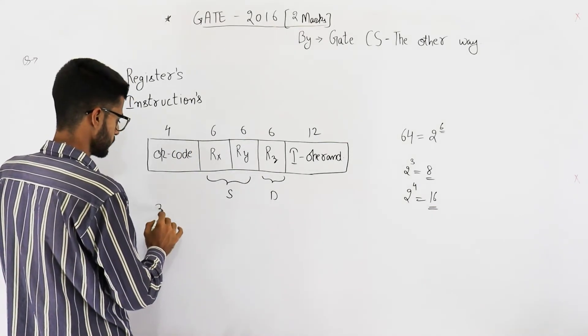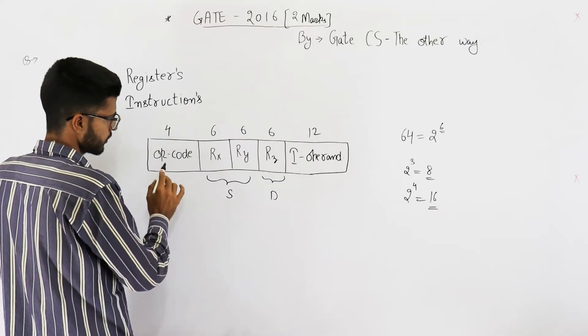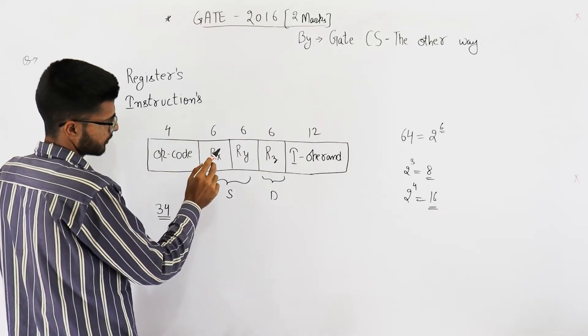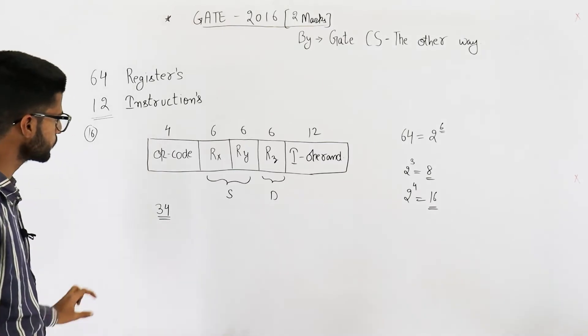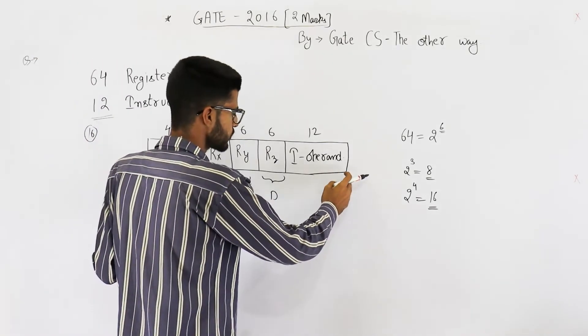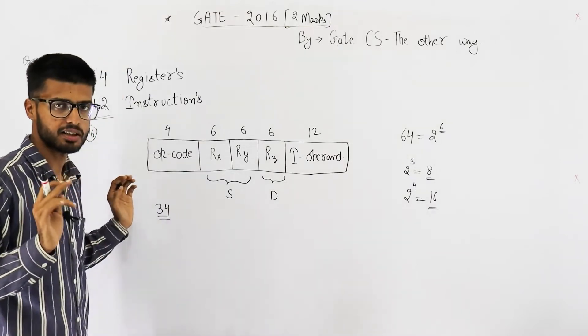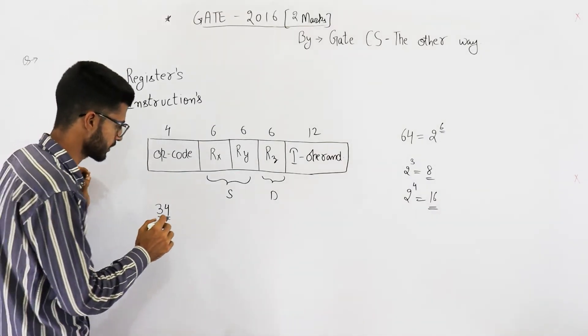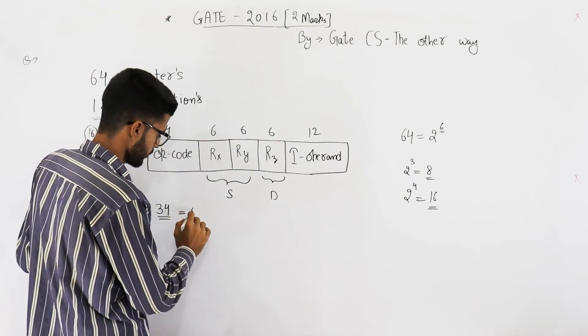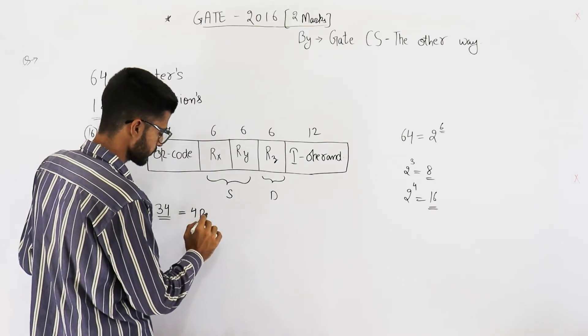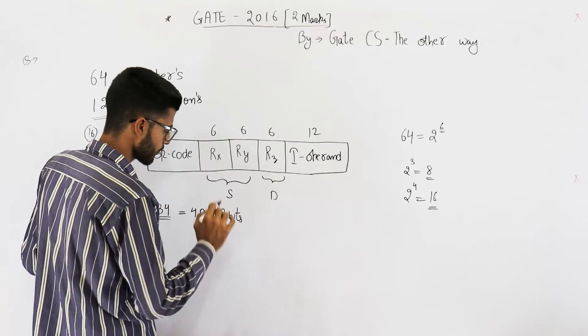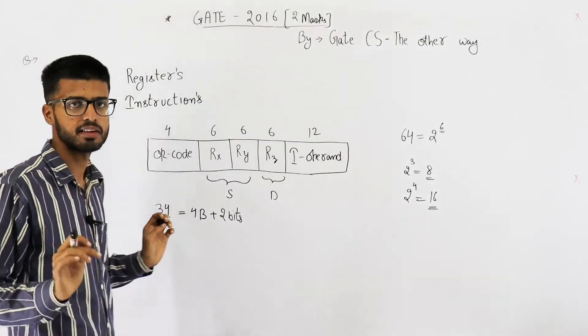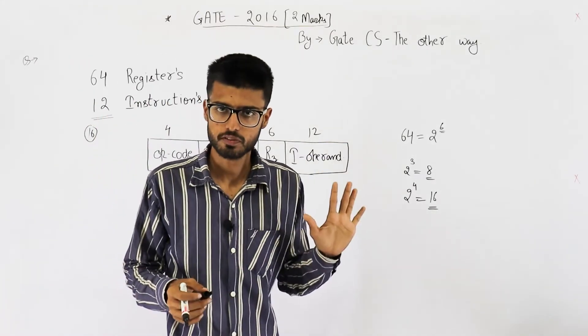Because 3.5 or 3-point something doesn't make sense. You either have to have a bit or you will completely skip it. So, just add this. You get 34. 34-bits. That means, one instruction needs to have 34-bits.